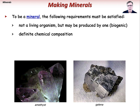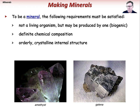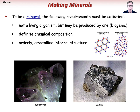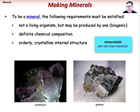It also must have an orderly internal structure. The difference between the mineral quartz and window glass is that window glass lacks a rigid crystalline framework. Natural, inorganic materials having a definite chemical composition but no orderly internal structure are known as mineraloids, and include various types of glass.